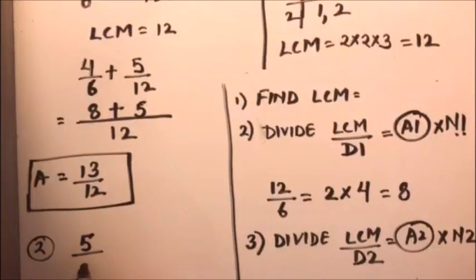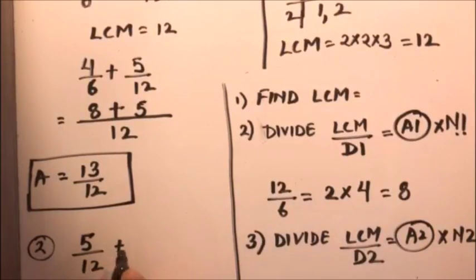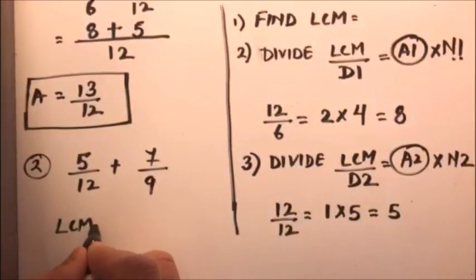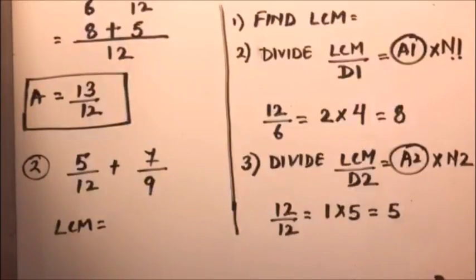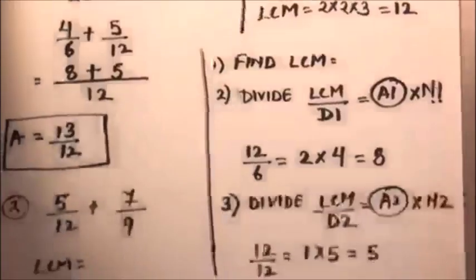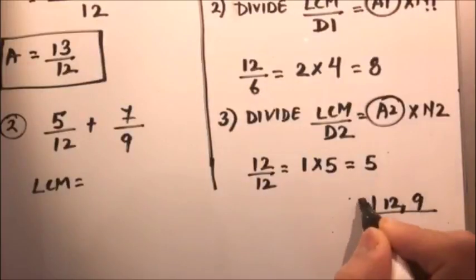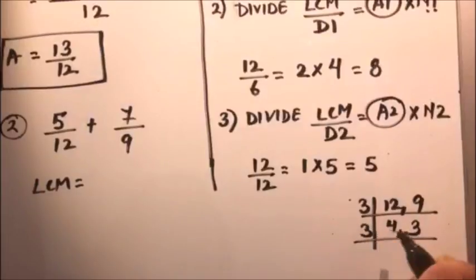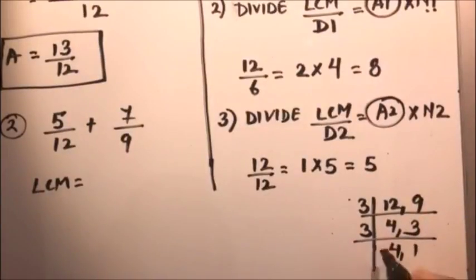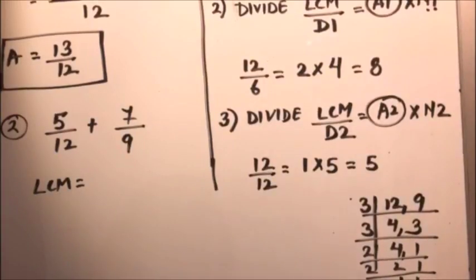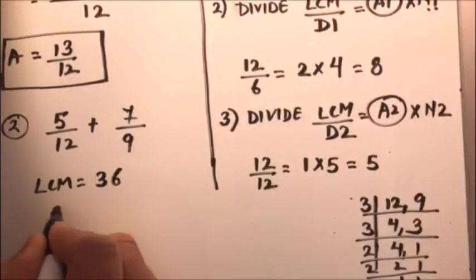Now let's take example number two. Here we have five over twelve plus seven over nine. The first step is to find the LCM of twelve and nine. Working it out: three, four, three, three, four, one — the LCM is four times nine, which is thirty-six.